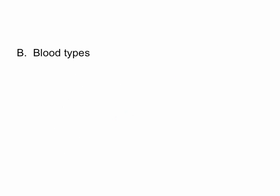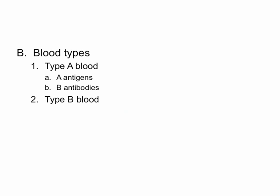Let's look at the different blood types. If you have type A blood, it is named for the antigen on the surface of the blood cell. Therefore, people with type A blood have A antigens. Since people with type A blood are not type B, they would also have B antibodies. People who have type B blood are named type B because of the antigen on the cell surface, so they would have type B antigen. And since they are not type A blood, they would have A antibodies.